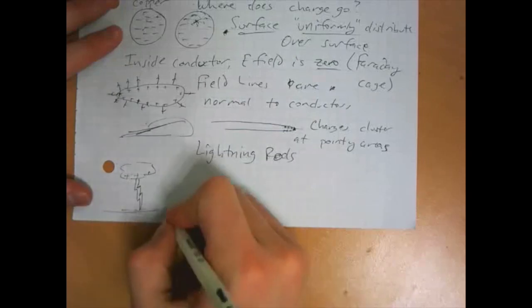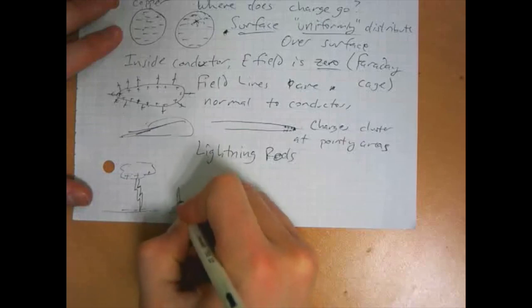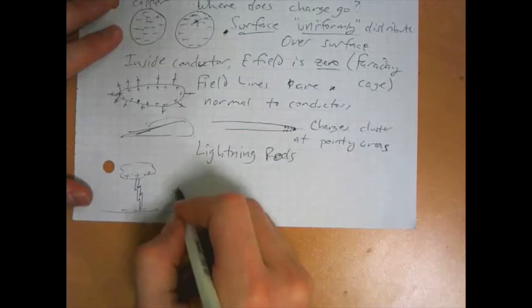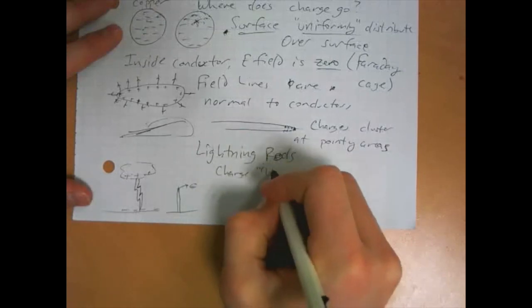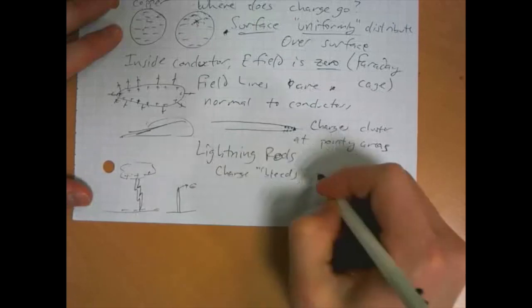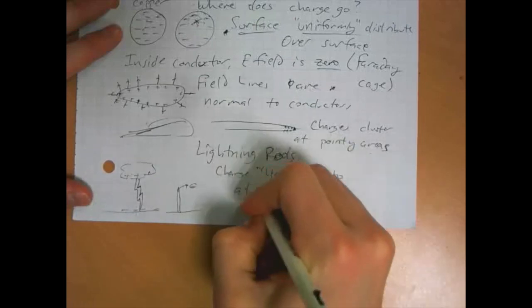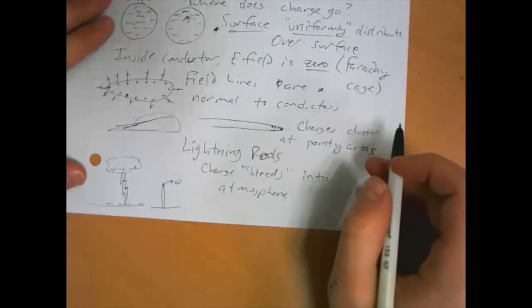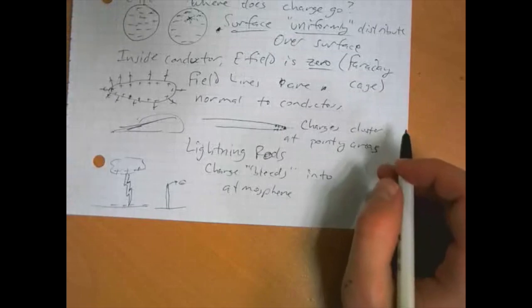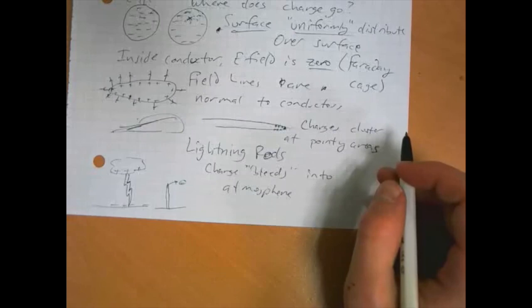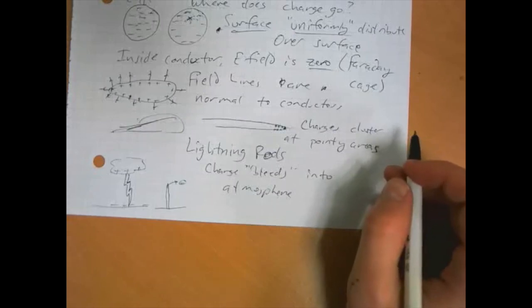What a lightning rod does is, because it makes the charges so densely packed right at the tip there, that they're densely packed enough that they can actually push each other out into the air. And so the charge kind of bleeds into the atmosphere, which prevents there from being enough of a charge difference for lightning to happen at all. So if a lightning rod is working correctly, there won't be enough of a charge difference to produce lightning in the first place.